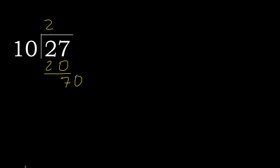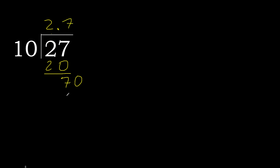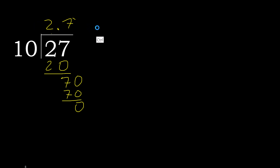Next — that is not a number, therefore complete with 0. So write point 0, making it 70. 10 multiplied by 7 is 70. Subtract: 70 minus 70 is 0. Therefore finish — 27 divided by 10 is 2.7.